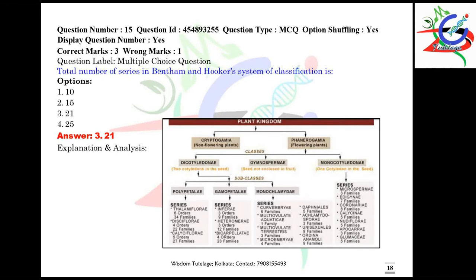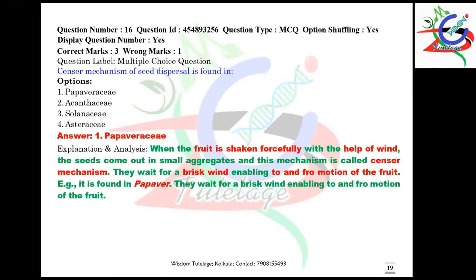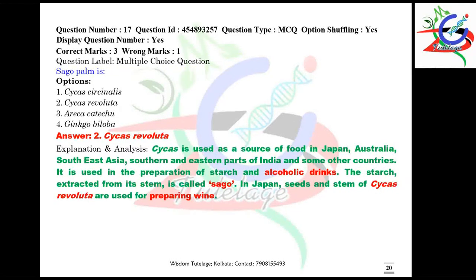Question number sixteen: the censer mechanism of seed dispersal is found in which family? It is found in family Papaveraceae. In the censer mechanism, when the fruit is shaken forcefully by wind, seeds come out in small aggregates. The plant waits for a brisk wind enabling to-and-fro motion of the fruit. It is found in the genus Papaver.